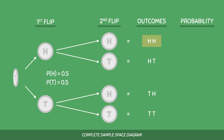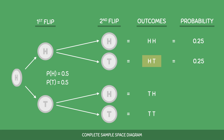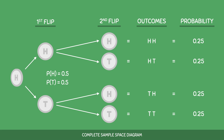For the first outcome, we have HH. So we will have 0.5 times 0.5, which is equal to 0.25. This means that the probability for the outcome of getting two heads is equal to 0.25. For the second outcome, we have HT. The probability of getting heads is 0.5 and the probability of getting tails is also 0.5. Multiplying these two together, we get 0.25. This means that the probability for the outcome of getting heads and then tails is equal to 0.25 or 25%. We are essentially doing the same thing for the rest of these outcomes.